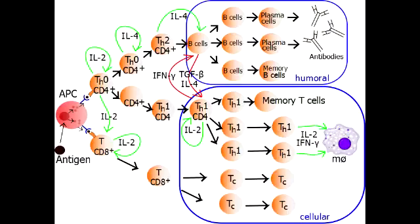As we know from earlier discussions, an activated CD4 T-cell will become a T-Helper 1 or T-Helper 2 cell. T-Helper 1 cells secrete interferon gamma, and their function is to activate macrophages.